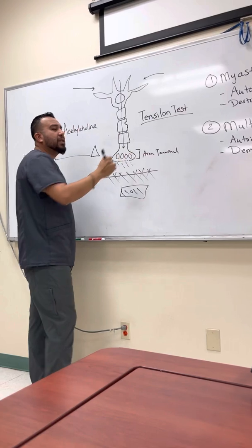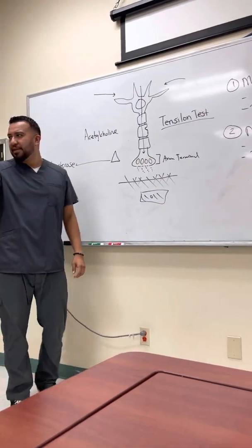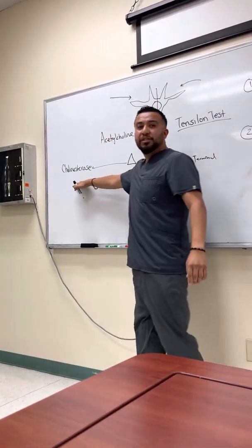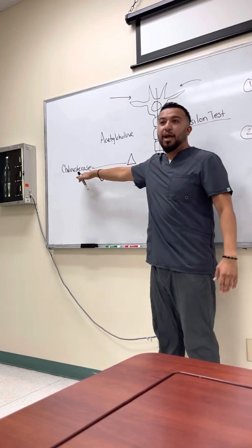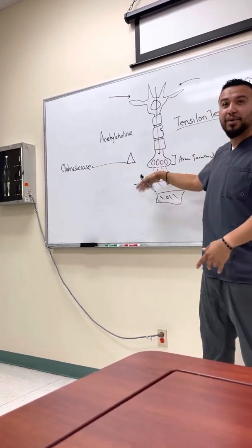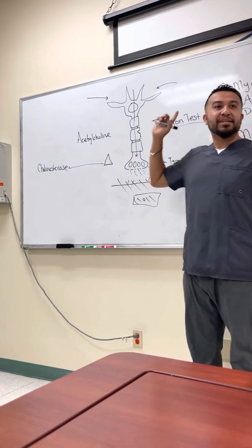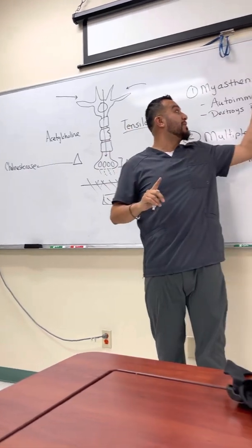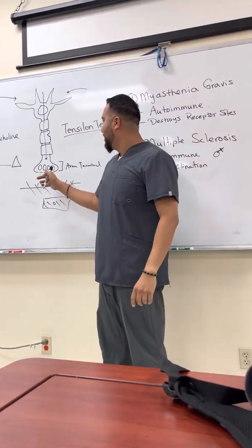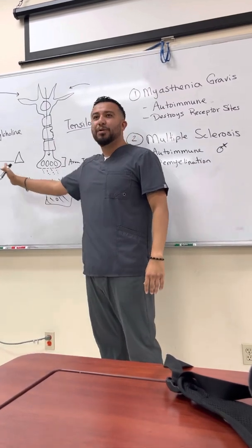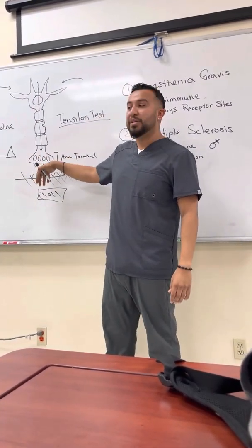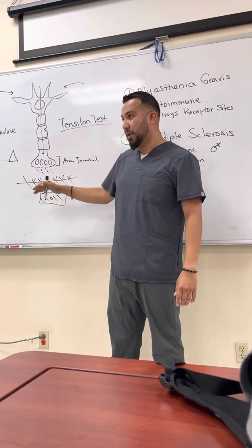The tensilon test uses a small dose. Remember cholinesterase — how it's supposed to recycle the acetylcholine so we won't waste it? But if you have myasthenia gravis, where your receptor sites are destroyed, do you want to remove that acetylcholine, or do you want to leave it there so it can eventually get to the receptor sites that are still working?